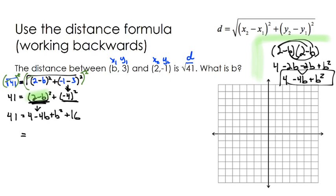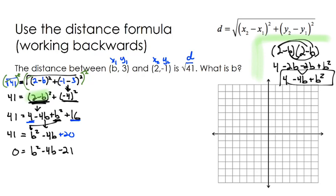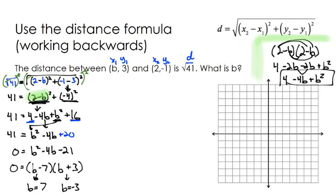Collecting everything on the right side: I write the quadratic term first, then the linear term, and combine the constants 4 plus 16 to make 20, still equal to 41. Subtracting 41 from each side gives b squared minus 4b minus 21 equals 0. I'll solve by factoring since it factors nicely — that gives b minus 7 and b plus 3, meaning b equals 7 and b equals negative 3.